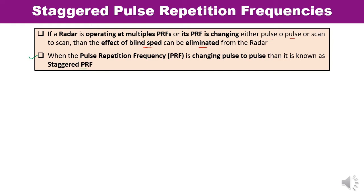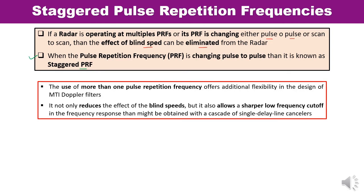The use of more than one pulse repetition frequency offers additional flexibility in the design of moving target indication Doppler radar filters. It not only reduces the effect of blind speed, but it also allows a sharp low frequency cutoff in the frequency response, which might be obtained with a cascaded single delay line canceller.